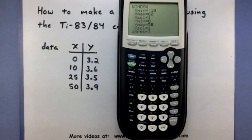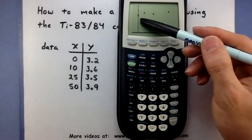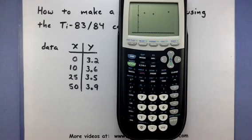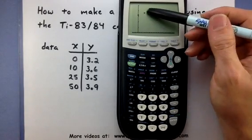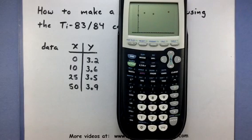Alright, now let's go take a look at the graph and see what it looks like. Alright, it looks pretty good. You can see that there are those four data points that we entered into the calculator. So there's 0, 3.2, 10, 3.6, 25, 3.5, and 50, 3.9.